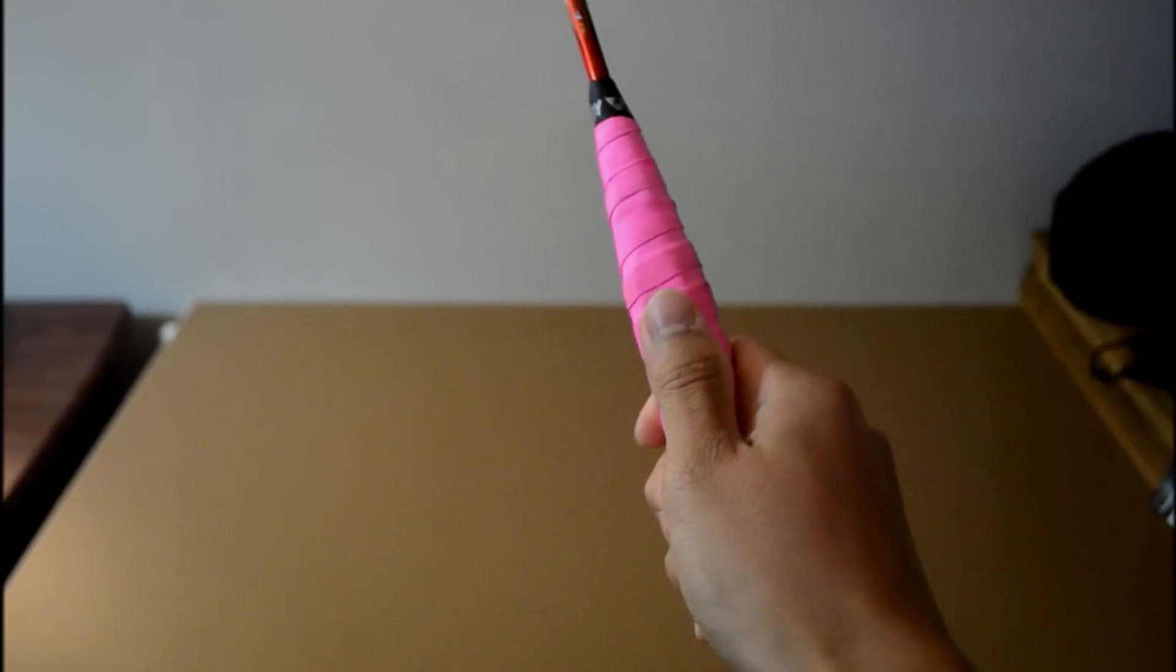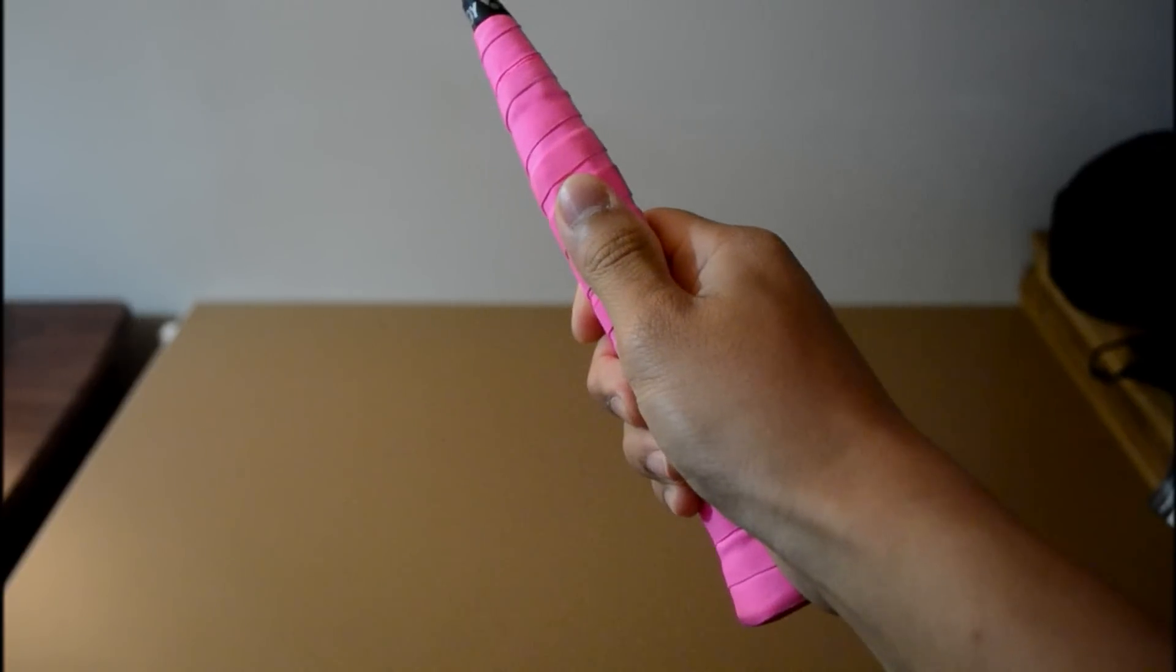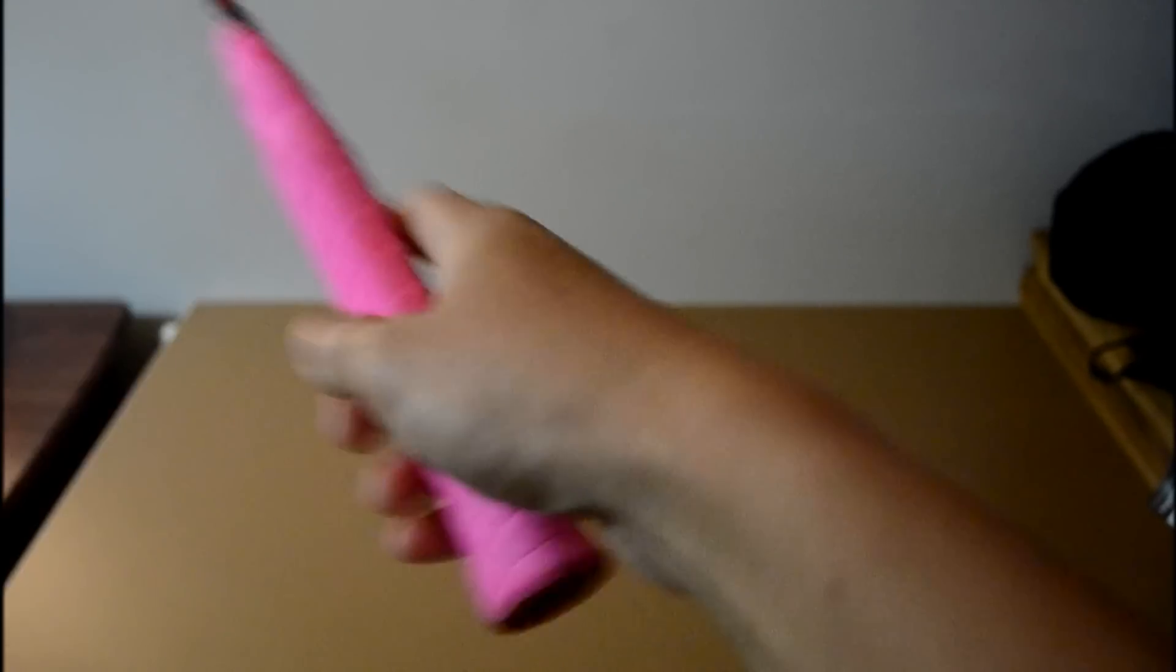And some people are holding it like this as well. Okay? So, to hold a forehand grip, pretend you're shaking somebody's hand, okay? And then translate that onto the racket.